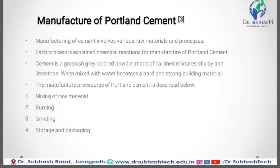Cement is a greenish-grey coloured powder made of a calcined mixture of clay and limestone. When mixed with water, it becomes a hard and strong building material. The manufacturing procedure of Portland cement involves four stages: first is mixing of raw material, second is burning, third is grinding, and the last is storage and packaging.